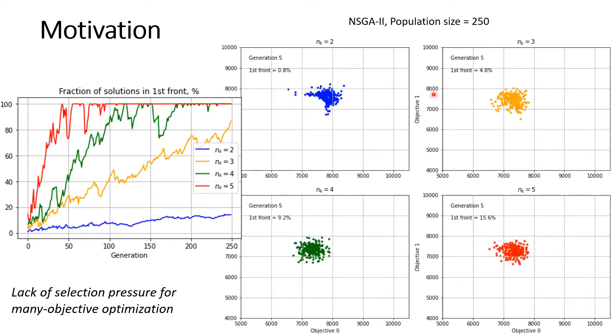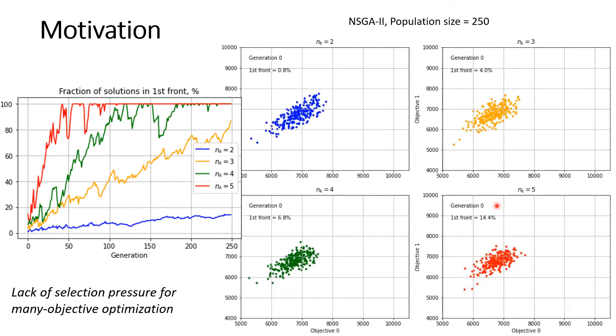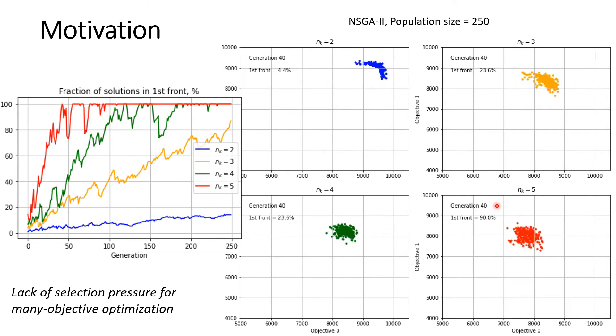This observation is also demonstrated with the animation on the right. Here the red cloud of points stops advancing faster than the others. All this makes the problem of adapting the Pareto dominance-based genetic algorithms to the case of large number of objectives an important research topic.